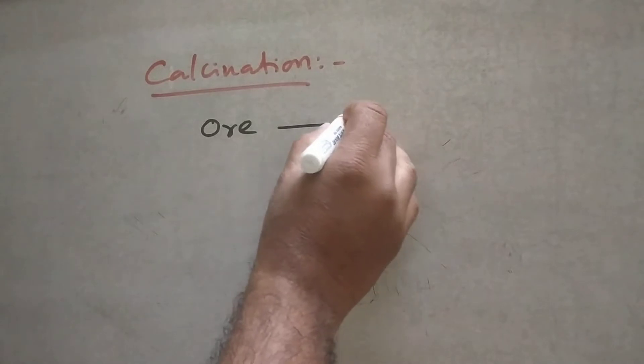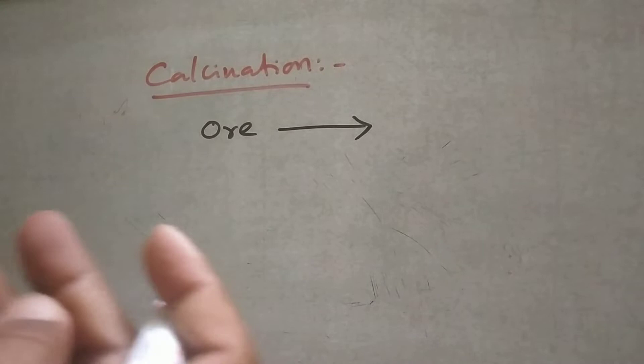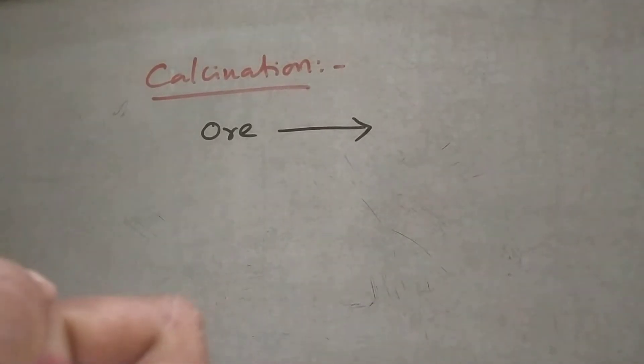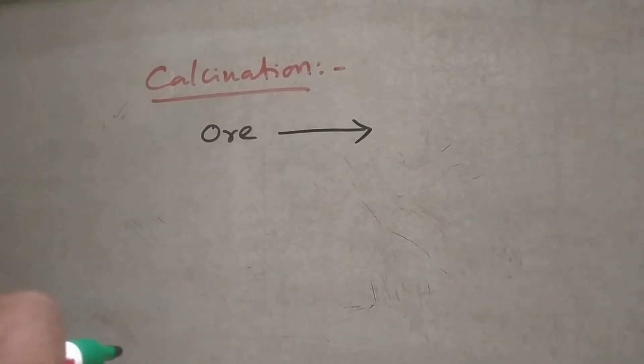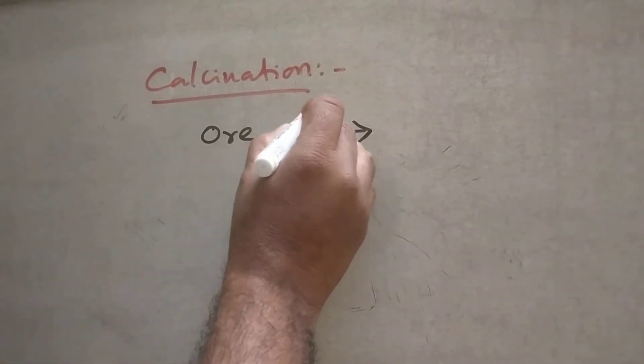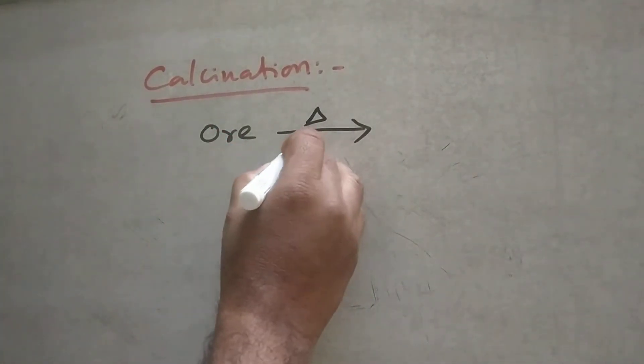Number one, that is calcination. What is calcination? Calcination means heating of an ore. Ore means the material from which we can profitably extract a metal — less investment with more profit. So, ore is subjected to heating in the absence of air.